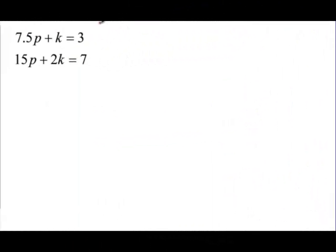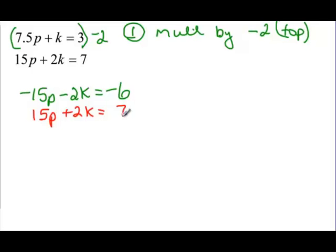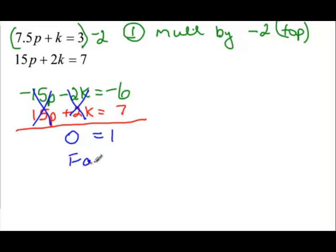When we look at this next equation, I can see that all my signs are the same, so I'm going to have to multiply something by a negative. I can make this k term become a negative 2k if I just multiply one equation by negative 2. So multiplying the top equation by negative 2 gives me negative 15p minus 2k and negative 6. I can recopy the second equation because it already has a positive 2k. Adding the two equations, negative 15p and 15p cancel, and negative 2k and positive 2k also cancel. On the constant side, negative 6 plus 7 gives me 1. So this is a false statement — and as we saw in substitution, that means there is no solution.